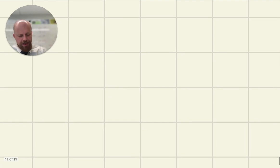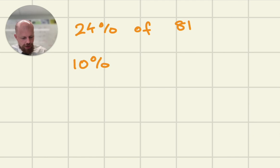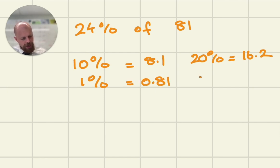In exactly the same way, let's say I wanted to find 24% of 81. I'll start by finding 10%, which is 8.1. And therefore, 20%, I can just double it, and that gives me 16.2. 1% will be 0.81, and 4%, if I times that by 4, I get 3.24.